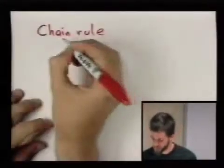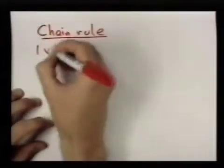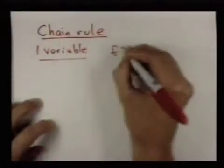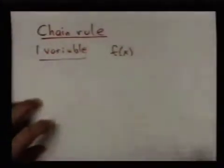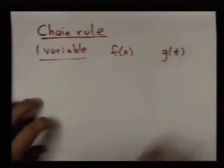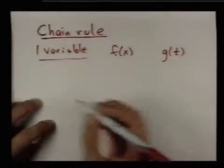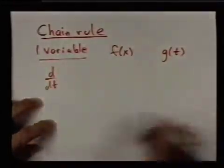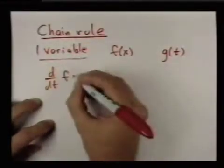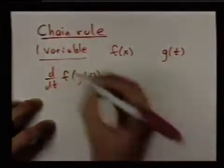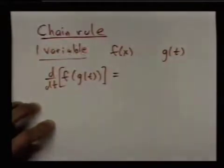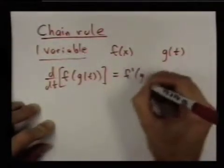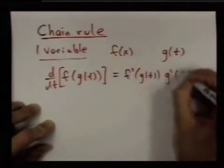Let me review the chain rule in one variable. In one variable, the idea is we have f as a function of x, and we have another function g that's a function of t, and we can compute the derivative with respect to t of the composed function f of g of t. The chain rule says that the derivative of this new function is f prime of g of t times g prime of t.